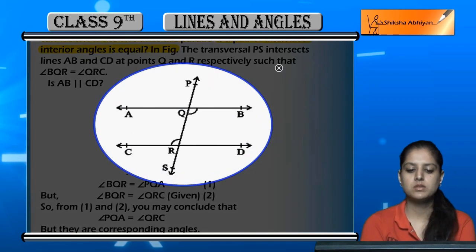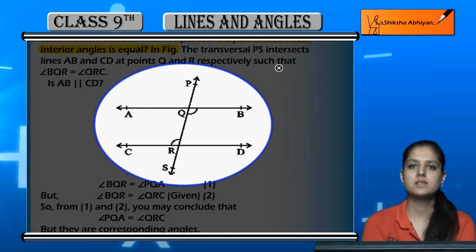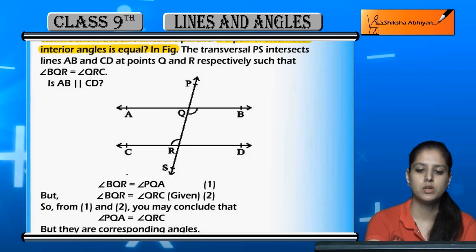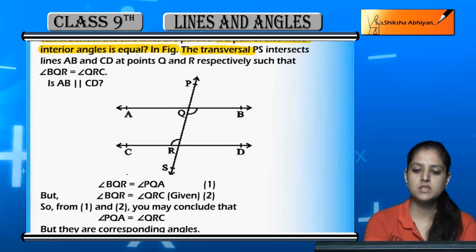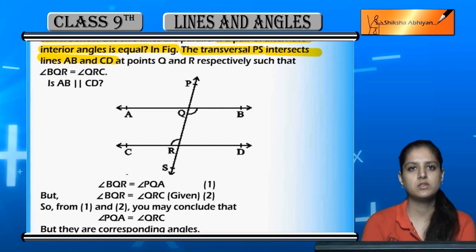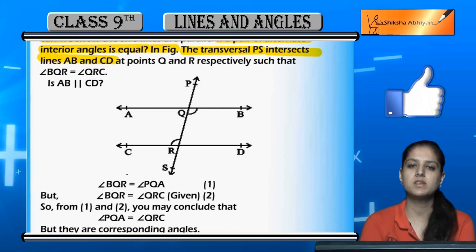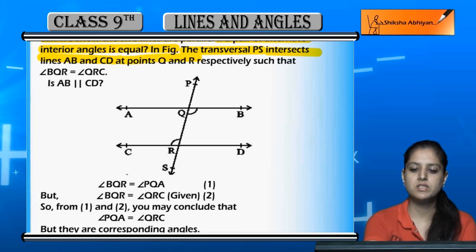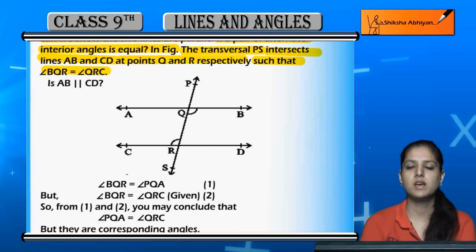We have two lines AB and CD and two angles - angle BQR and angle QRC. The transversal PS intersects lines AB and CD at points Q and R respectively.